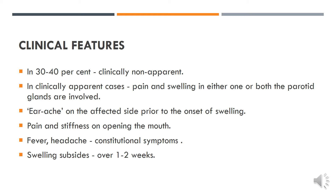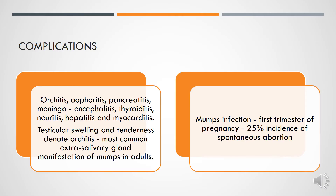The swelling usually subsides over a period of 2 weeks. Complications of mumps include orchitis, oophoritis, pancreatitis, meningoencephalitis, thyroiditis, neuritis, hepatitis, and myocarditis. The most common extrasalivary gland manifestation in adults is testicular swelling and tenderness, denoting orchitis. A mumps infection in the first trimester of pregnancy is associated with a 25% incidence of spontaneous abortion.